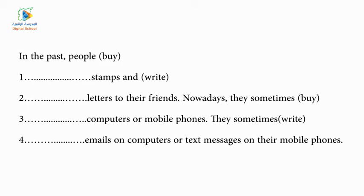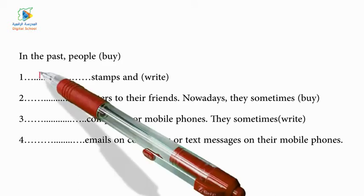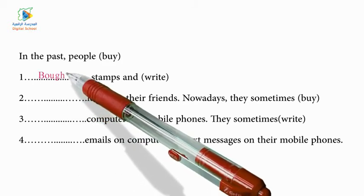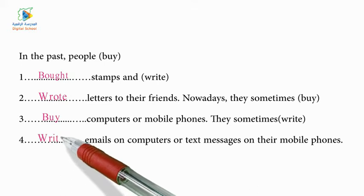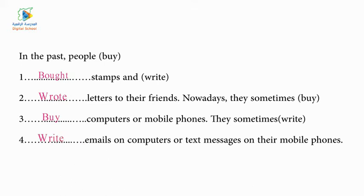In the past, people: 1. Bought stamps and 2. Wrote letters to their friends. Nowadays, they sometimes: 3. Buy computers or mobile phones. 4. Write emails on computers or text messages on their mobile phones.